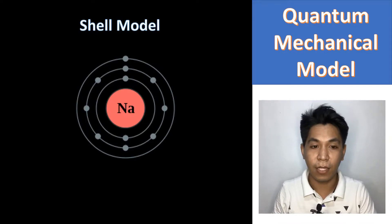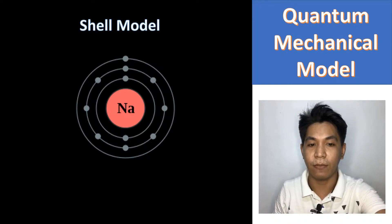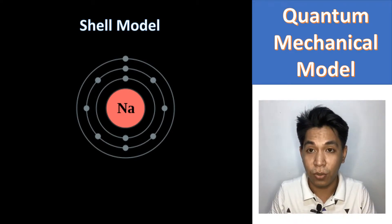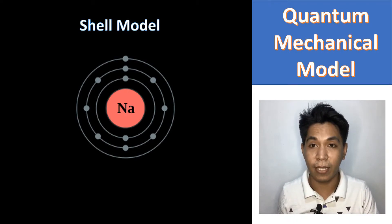Back then, the most acceptable model of the atom is what we call the Shell Model, which shows how electrons are located in exact places known as shells.